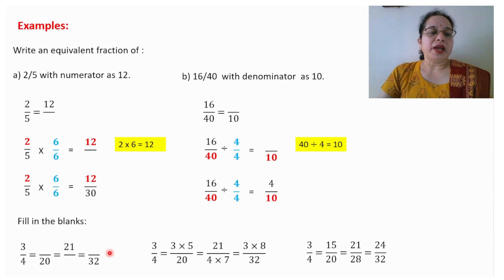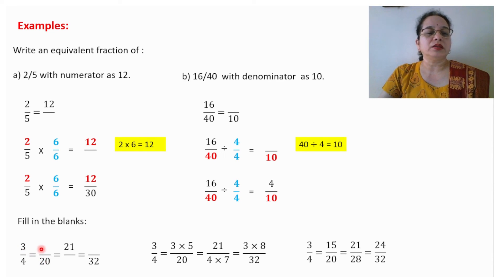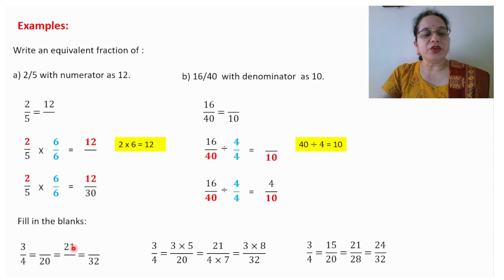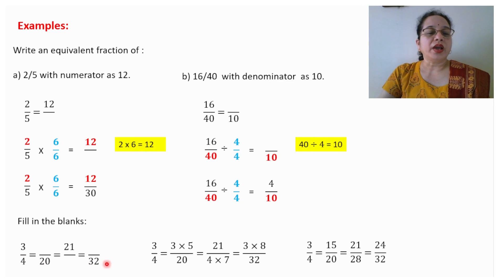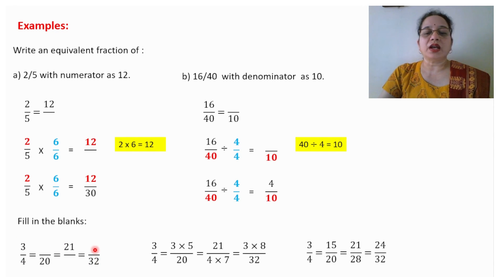Now fill in the blanks. For 3/4: 4 × 5 = 20, so 3 × 5 = 15 — answer is 15/20. Next: 3/4 = ?/21, since 4 × 7 = 28, so 3 × 7 = 21 — answer is 21/28. Next: 4/? = 32, since 4 × 8 = 32, so 3 × 8 = 24 — answer is 24.